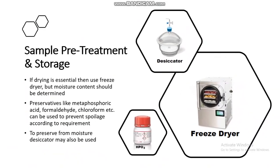If drying is essential, use a freeze dryer or air dryer, but moisture content should be determined. To avoid spoilage of food, preservatives like metaphosphoric acid, formaldehyde, or chloroform can be used. To preserve from moisture, a desiccator can also be used, which is helpful in preventing moisture content.